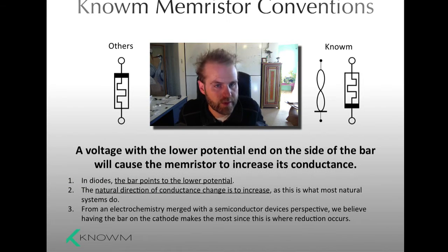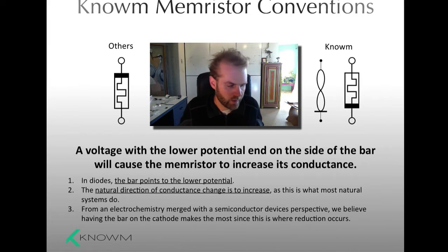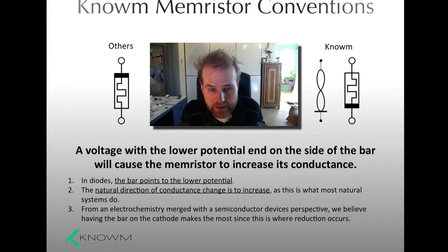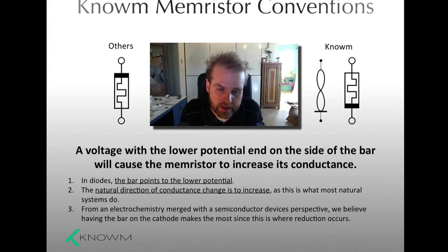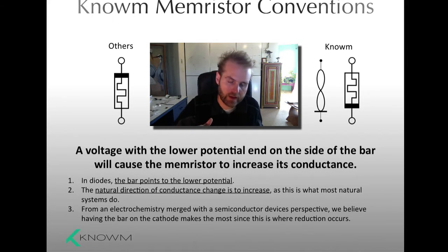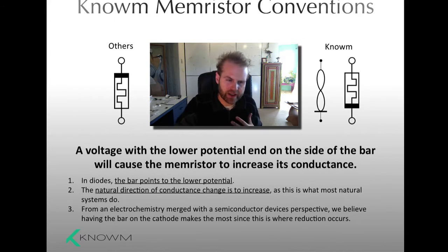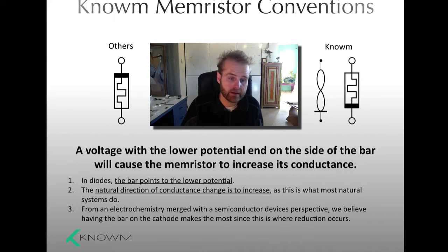Our Memristor polarity conventions are also flipped from what other people are doing. I think the way that we do it actually makes a lot of sense. Our convention is that a voltage with a lower potential end on the side of the bar will cause the Memristor to increase its conductance. The bar is usually on the negative potential end, especially with diodes. That opens up the question: what's the natural direction of conductance change for a Memristor? We think that is to increase its conductance.